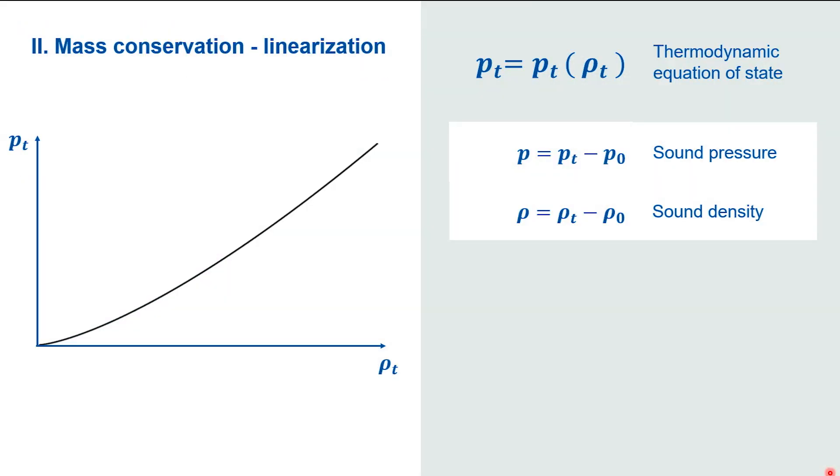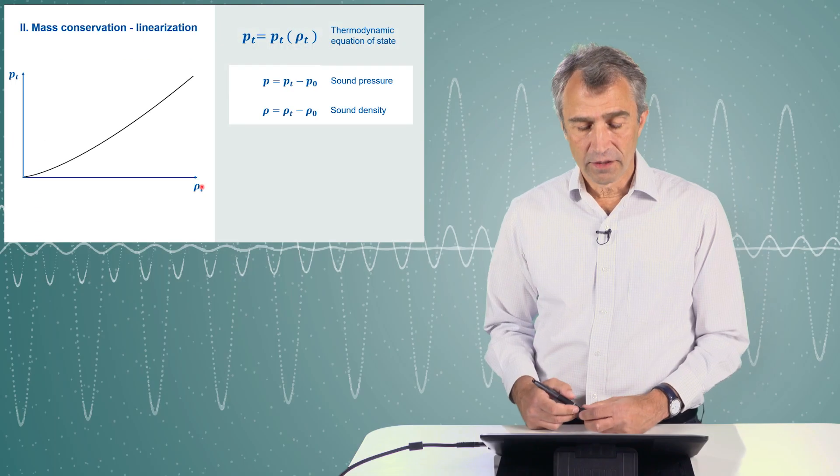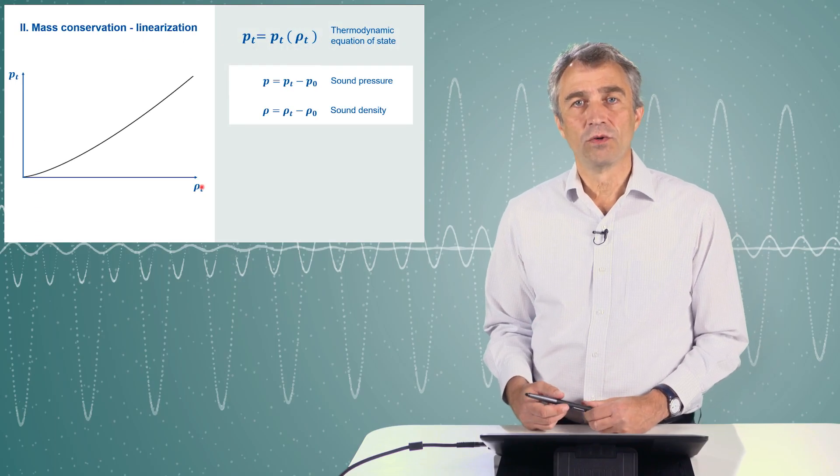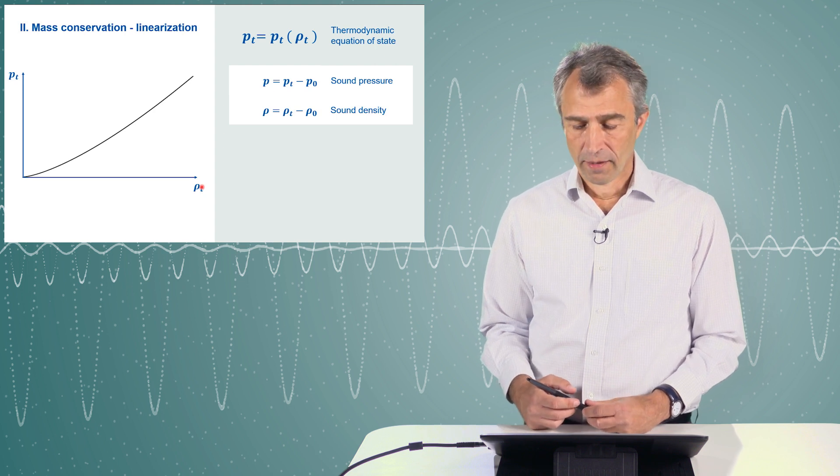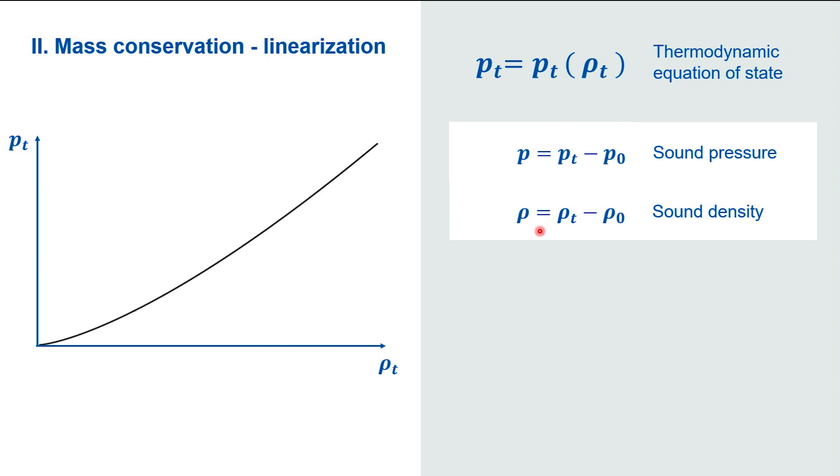We are trying now to get a relationship between the pressure and the density and this is given in a thermodynamic state equation. We have one illustrated here. It is on the y-axis the pressure, the total pressure in this medium air and on the x-axis the total density. This equation is well known as the so-called adiabatic equation of pressure and density. And now we need to consider that the sound pressure and the sound density is just a little change on the static pressure and the static density.